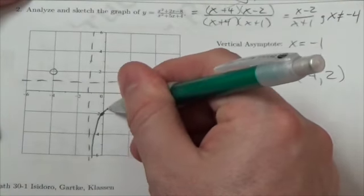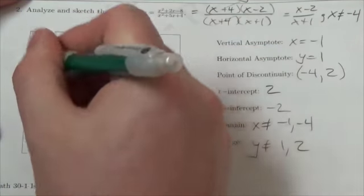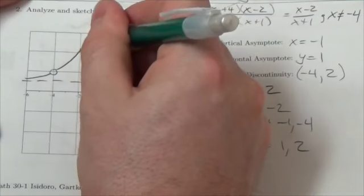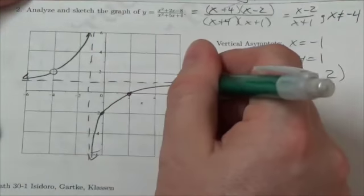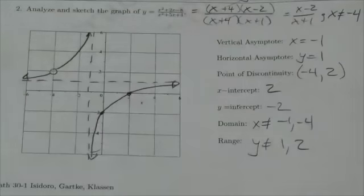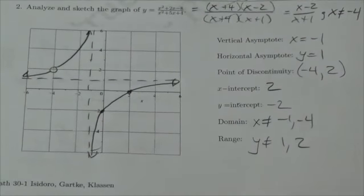And based on what I know of the way these things should look here, this thing's going to look something like this. It's going to come up, pass through there, and then it's going to go up to that point discontinuity, and then it's going to shoot up and follow along the asymptote. And so that's what my function is going to look like.